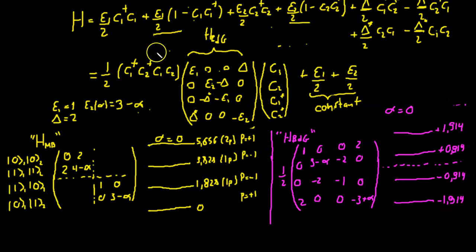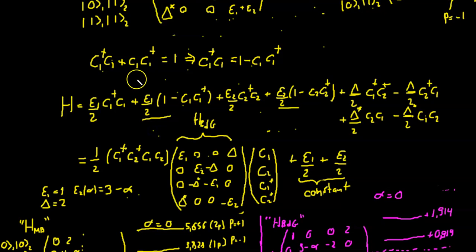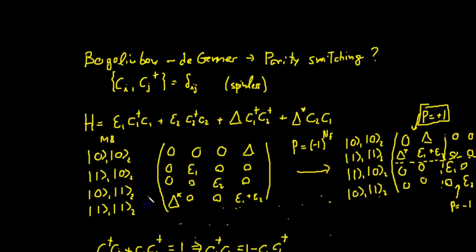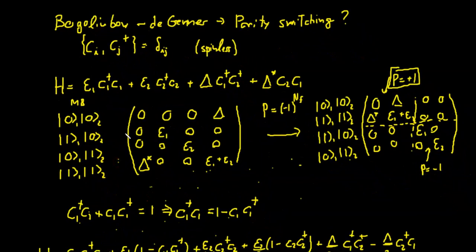So let's just recap what we did so far. So we start with a very simple model, just two fermionic operators with simple superconducting pairing. So this is all single particle.